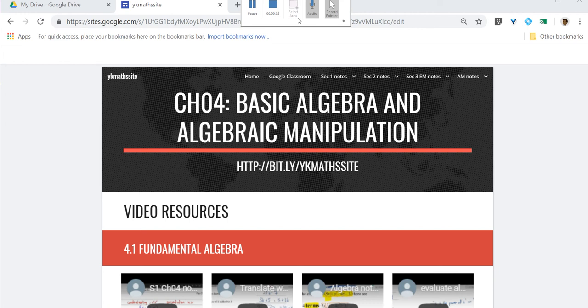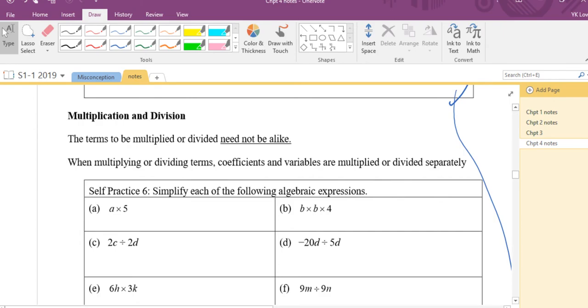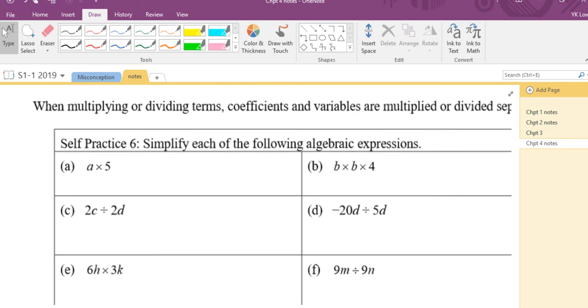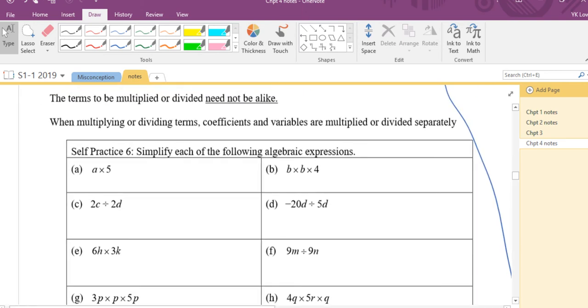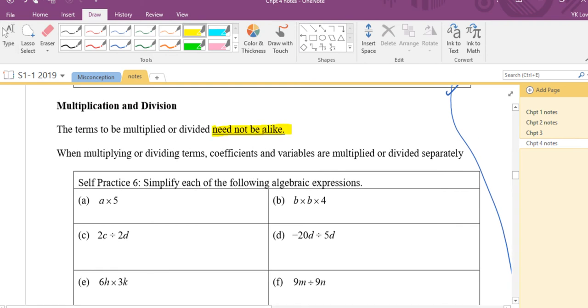Yes, easy? So let's try multiply and divide like terms. Let's have the first one. Now, highlight the important thing. When you multiply or divide, they need not to be alike. You can multiply them separately. Okay? So let's try the first one.